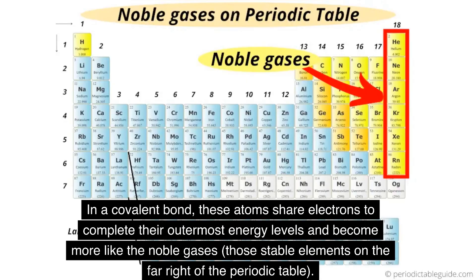In a covalent bond, these atoms share electrons to complete their outermost energy levels and become more like the noble gases, those stable elements on the far right of the periodic table.